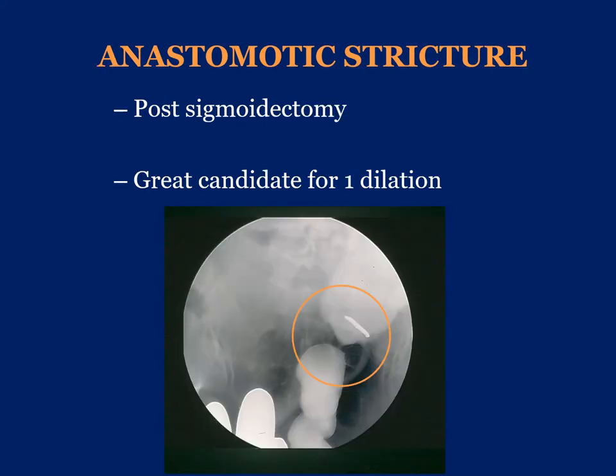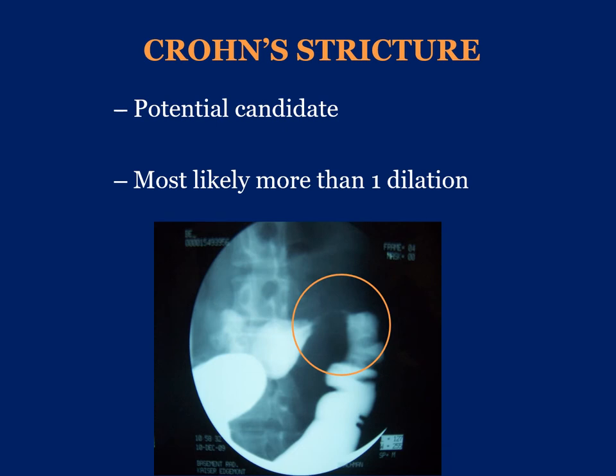The next few slides demonstrate some case illustrations. This patient, after a sigmoid resection for diverticulitis, presented with a very short stricture — a great candidate for dilatation. This patient completely resolved their symptoms after a single dilatation. This is a patient with Crohn's disease who has a longer stricture, and is still a potential candidate. It's important to counsel the patient that more likely than not they will need more than one session to dilate the lesion.